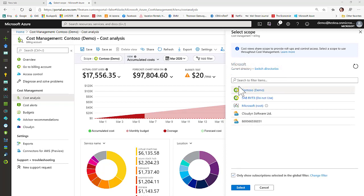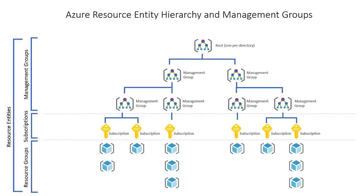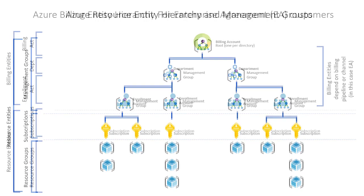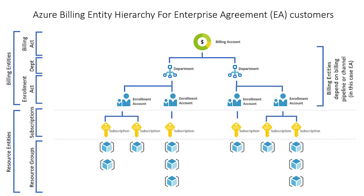Microsoft offers two hierarchies above Azure subscriptions that have specialized roles to manage billing data: the resource entity hierarchy and the billing entity hierarchy. The resource entity hierarchy consists of a hierarchy of management groups, subscriptions, resource groups, and resources, as you can see here. Above subscriptions, there is a separate billing entity hierarchy — it varies depending on the channel or offer being used. For example, here it is for Enterprise Agreement or EA customers.